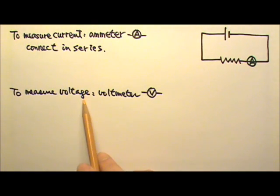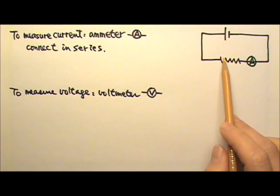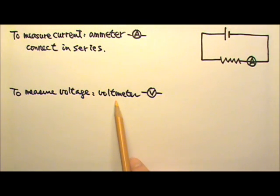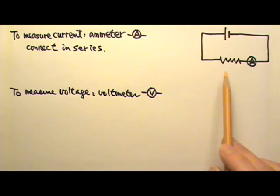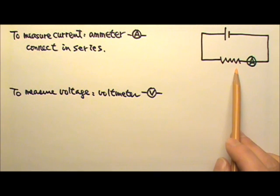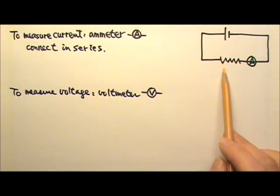To measure the voltage across, say, this resistor, we use a meter called voltmeter. We draw a circle around the capital V for voltmeter. How do you think we should connect this meter to this circuit in order to measure the voltage difference across this resistor?